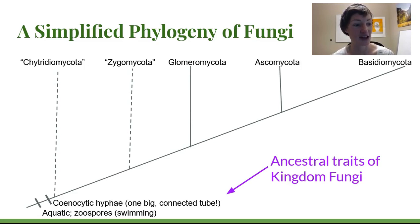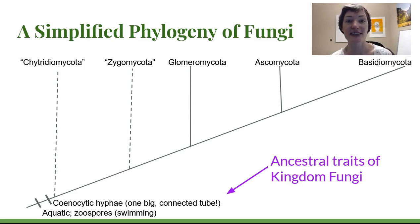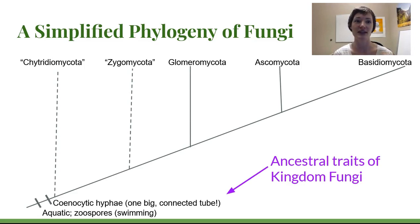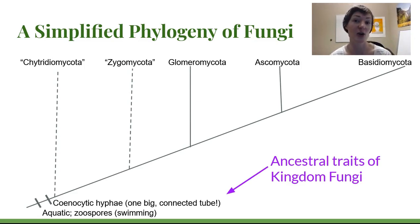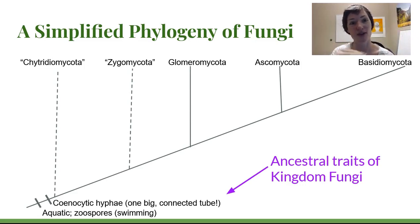Here at the base of the phylogeny are two ancestral traits — traits that are present in all of kingdom fungi but aren't necessarily derived within kingdom fungi. We can use them to classify the whole group but not differentiate within the group. Early fungi and the ancestors of fungi were aquatic, and they had zoospores — 'zoo' refers to alive and moving — so zoospore means a spore that has flagella and swims around.